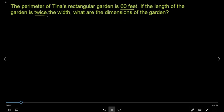If the length of the garden is twice the width, what are the dimensions? If we denote the width as W, then the length is twice the width, so it's 2W.